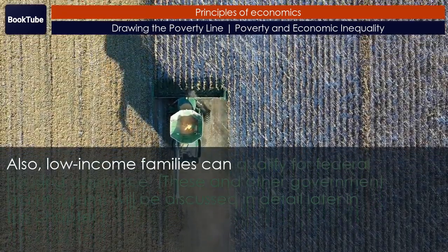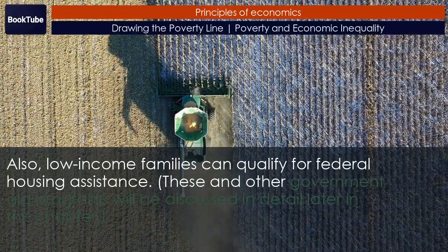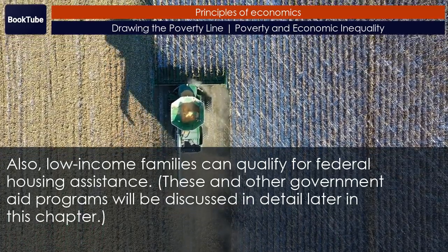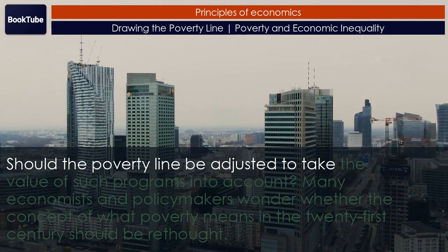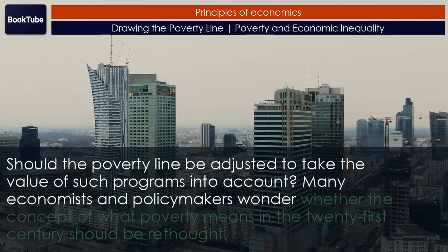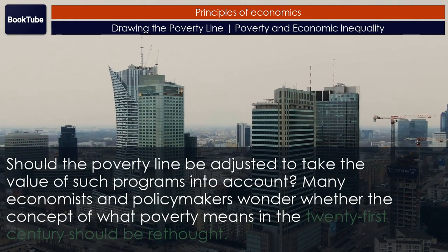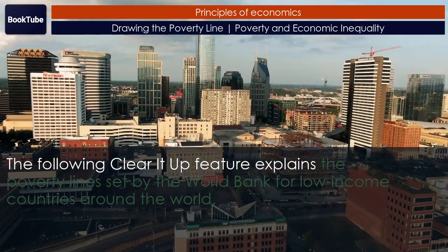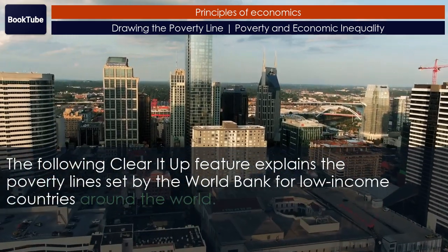Also, low-income families can qualify for federal housing assistance. These and other government aid programs will be discussed in detail later in this chapter. Should the poverty line be adjusted to take the value of such programs into account? Many economists and policymakers wonder whether the concept of what poverty means in the 21st century should be rethought.